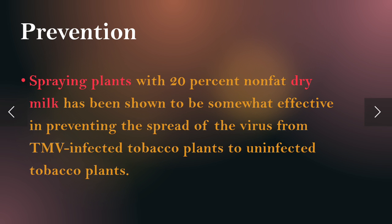Prevention of disease: spraying plants with 20 percent non-fat dry milk has been shown to be somewhat effective in preventing the spread of virus from TMV-infected tobacco plants to unaffected tobacco plants.